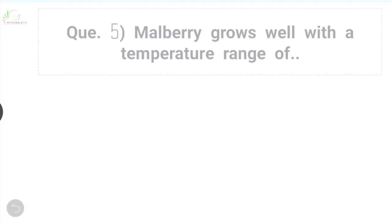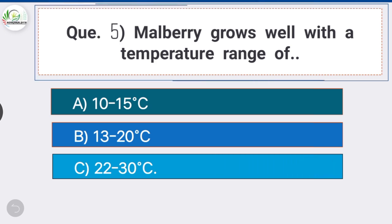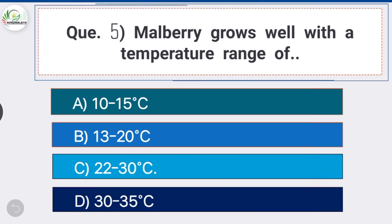Question number five: mulberry grows well with the temperature range of — option C is the correct answer — 22 to 30 degrees Celsius. The ideal range of temperature for mulberry is 22 to 30°C. It grows well in places with annual rainfall ranging from 600 mm to 2,500 mm.